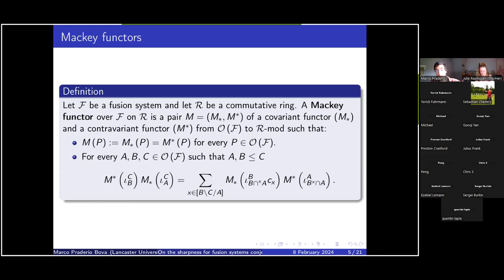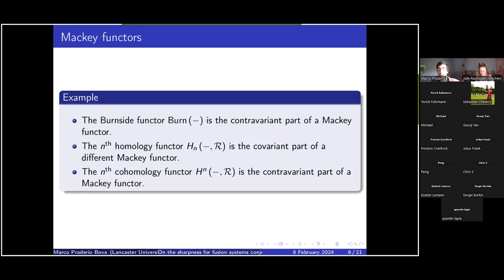The interesting thing about this construction is that, despite it looking very complicated, it seems to appear in a lot of different situations: in algebraic K-theory, in representation theory, in Burnside rings of groups, in group homology, and in group cohomology. The example of a Macki functor we will be most concerned with during the talk is the cohomology Macki functor, whose contravariant part is the cohomology functor of a group with coefficients in a ring r — which will be F_p in our case.